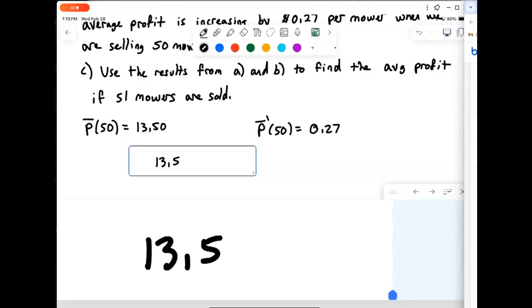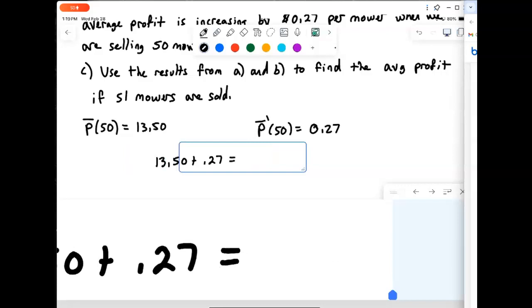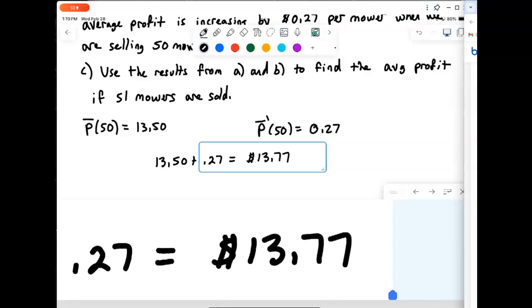So when we go up one mower, it should go up, profit average profit should go up by 27 cents. And that would put us at an average profit of $13.77.